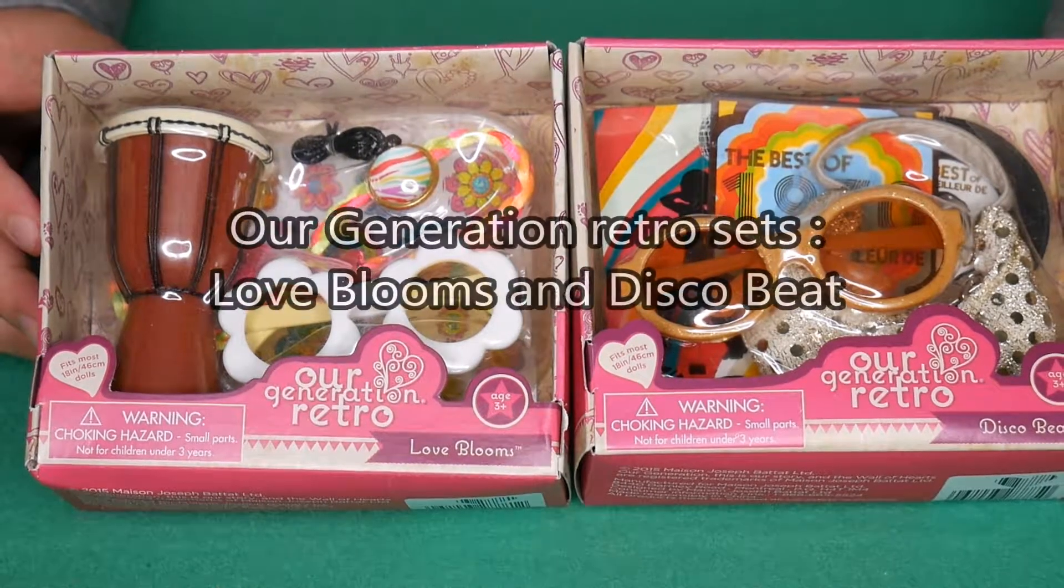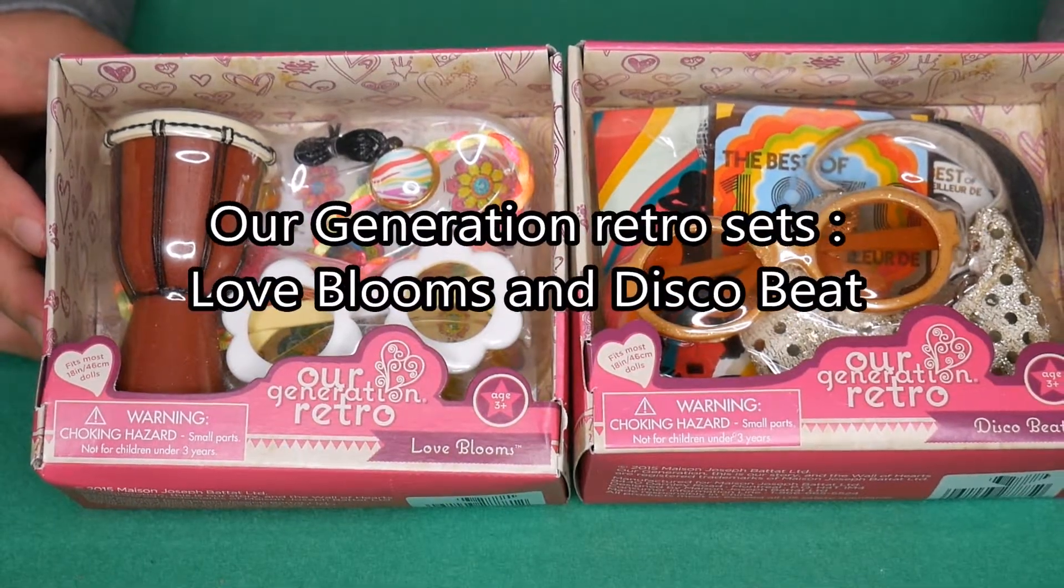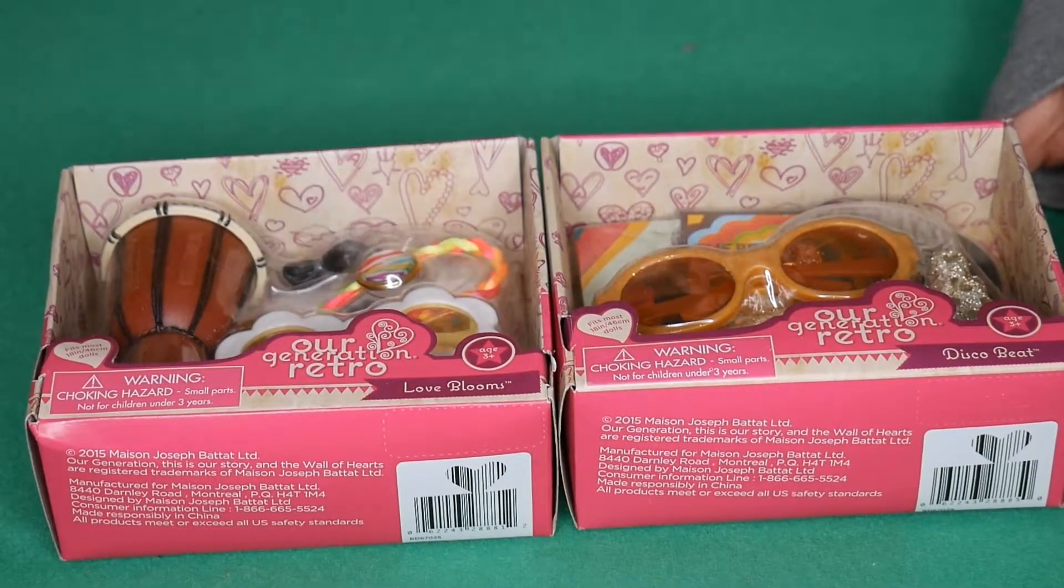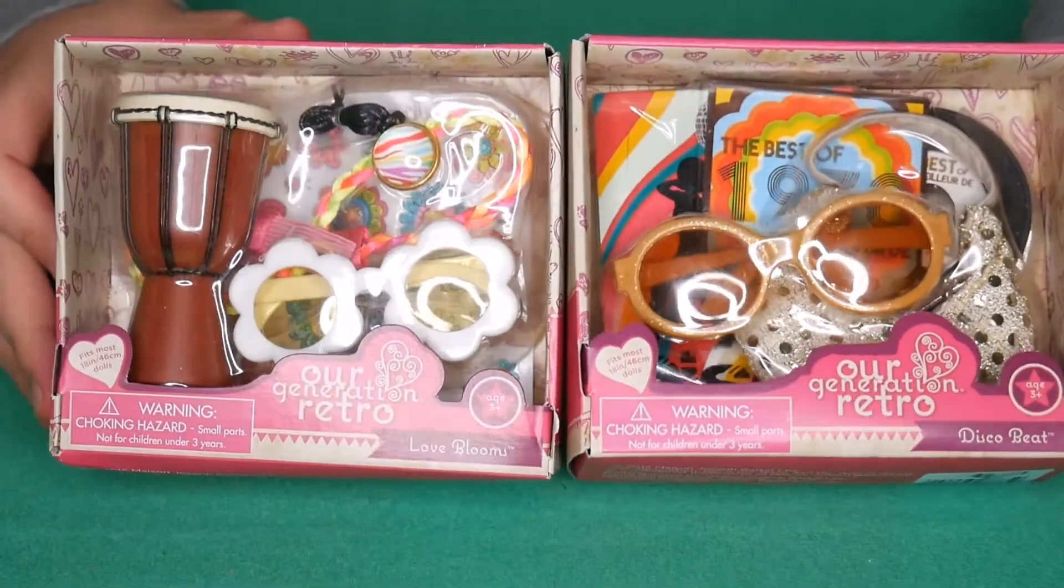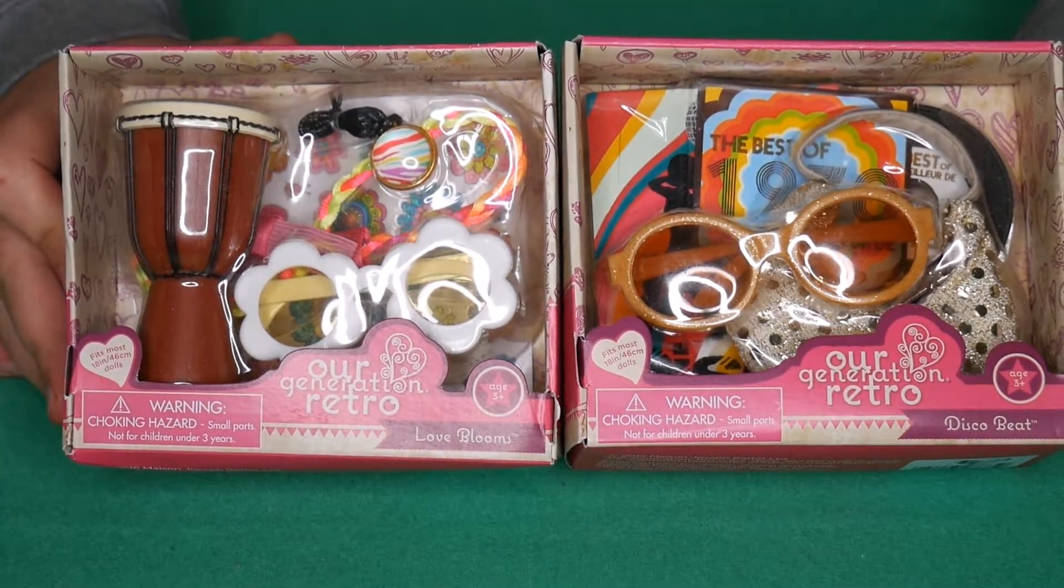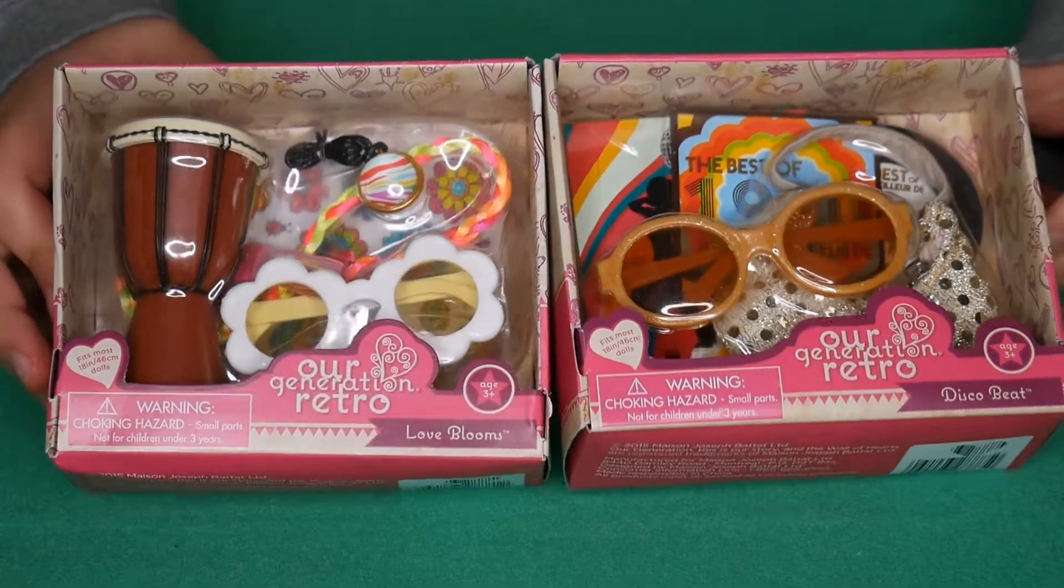Welcome back to Adventures with Riley. Today we're going to open these two sets. They are called Love Blooms and Disco Beach. They are from the retro range that Our Generation did. These are suitable for any 18 inch doll you may have.